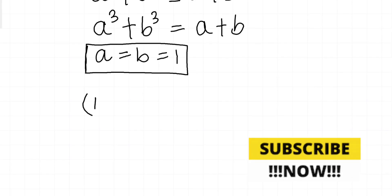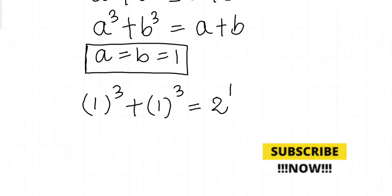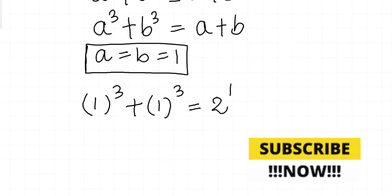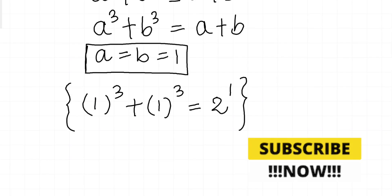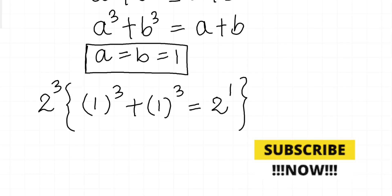So in our original equation, 1³ plus 1³ is our original solution. And you can multiply both sides by powers of 2, and you will get a new solution which is 2³.